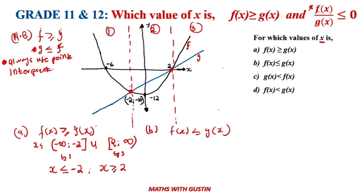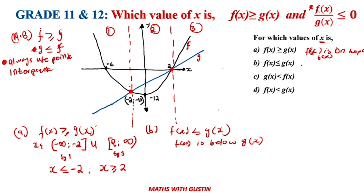Question B: f(x) ≤ g(x). We are looking for a situation where f(x) is below g(x). In the regions where f(x) is on top of g(x), that doesn't apply. In the middle region — stage two — f(x) is below g(x).